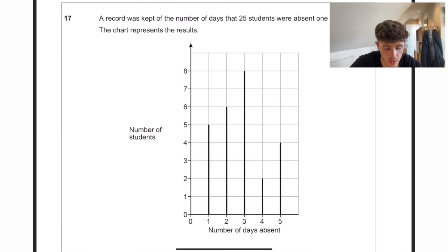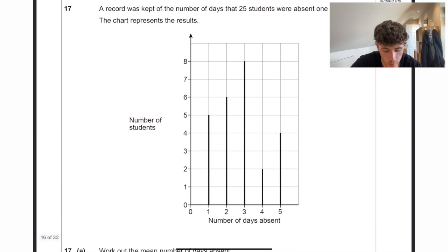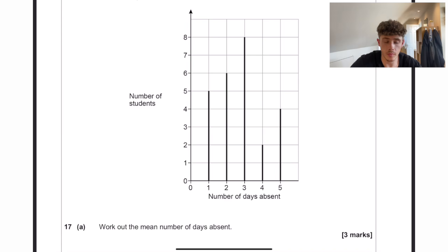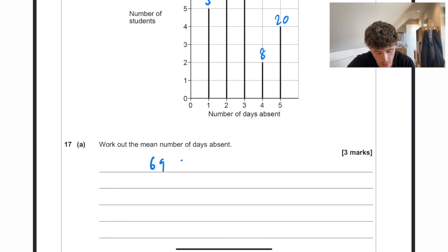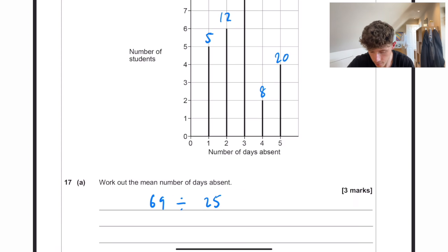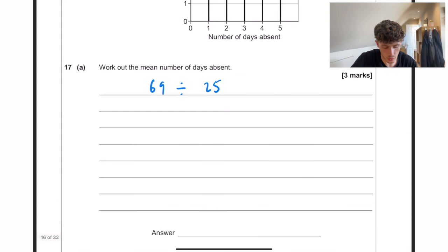A record was kept of the number of days that 25 students were absent one term. The chart represents the results. Work out the mean number of days absent. So what we actually want to do here is times them. So five students had one day absent, so that's five in total. Now six students had two days absent, so that's 12 days in total. Eight students had three days absent, so that's 24. That would be eight, and that would be 20. If we add all those together, that is going to come to 69 days in total, and we want to divide that by the 25 students.